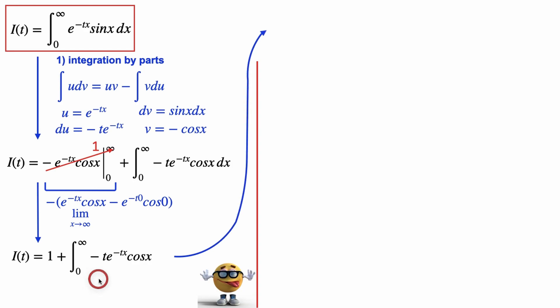We're going to do integration by parts again. So we'll set u equal to negative t e to the negative tx, this part right here, and then dv to the other stuff, so cos x dx.